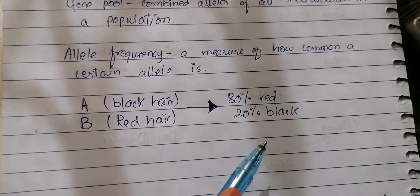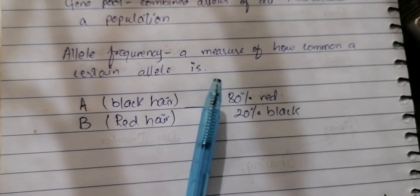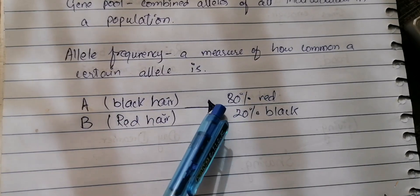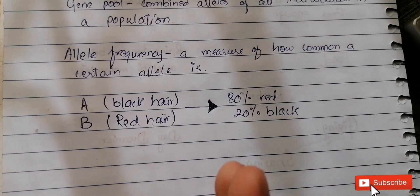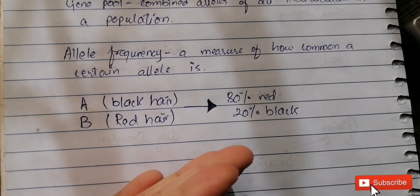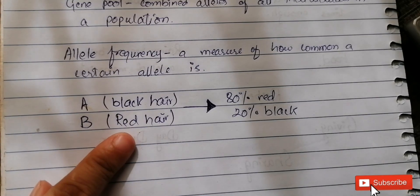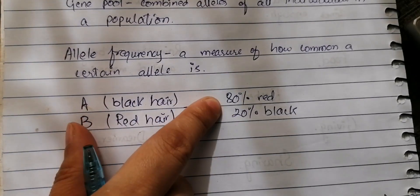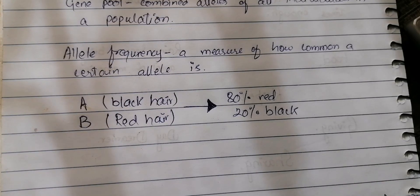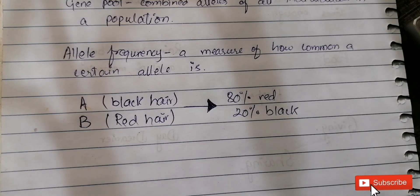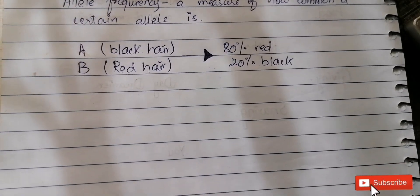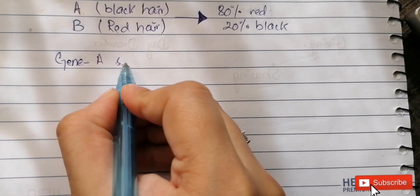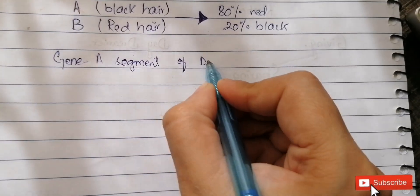It means the tendency or capability of the allele responsible for red hair color is more dominant over the recessive black hair color. The frequency — the number of times or greater extent — of red hair color is greater. In this example, red hair is winning at 80 percent versus 20 percent for black hair. This is how allele frequency is defined: a measure of how common a certain allele is.